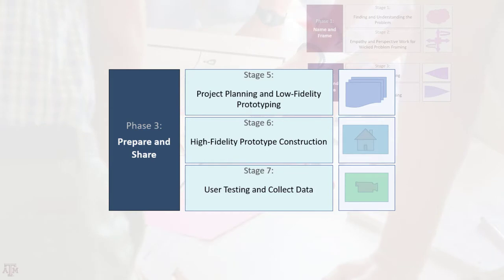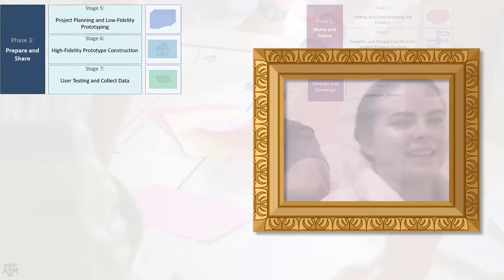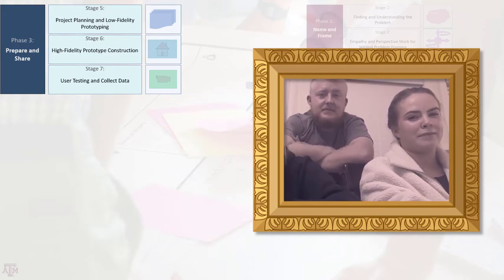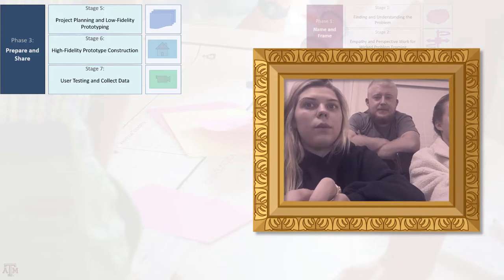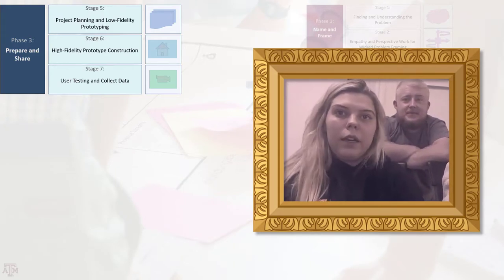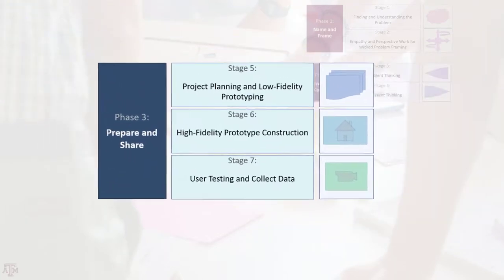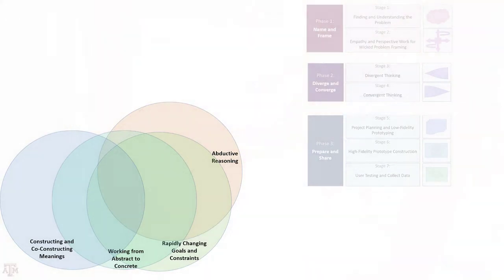Because designers tackle wicked problems, the problem cannot be fully described until a solution is taking shape, and the solution cannot be formed without a problem statement. Working in this tension between the ever-evolving problem and the ever-evolving solution is known as abductive reasoning. The designerly ways of knowing used most often in this phase are abductive reasoning, rapidly changing goals and constraints, working from abstract to concrete, and constructing and co-constructing meanings.